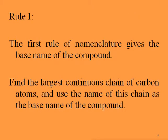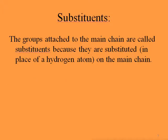Let's see what the rules are for naming based on IUPAC. Rule 1 for naming alkanes in the IUPAC system: the first rule of nomenclature gives the base name of the compound. We need to find the main branch — find the largest continuous chain of carbon atoms and use the name of this chain as the base name of the compound. The groups attached to the main chain are called substituents, because they are substituted in place of a hydrogen atom on the main chain.